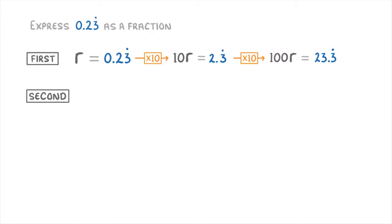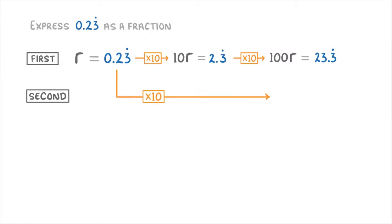For the second sum though, we only multiply it by 10 until the non-recurring decimals are to the left of the decimal point. So in this case it's just the 2 that we want on the left, meaning that we only need multiply it by 10 once to get 10r equals 2.3 recurring. Next we subtract the smaller sum from the larger one.